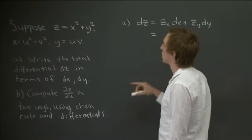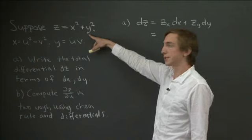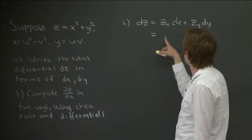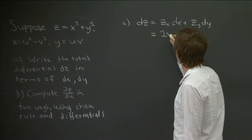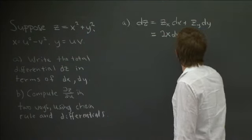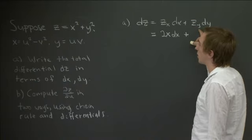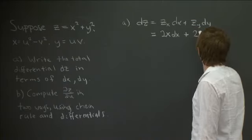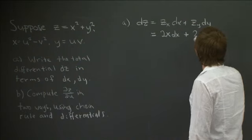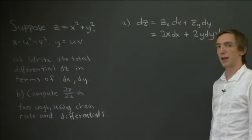So now, looking at our formula here for z, we have the partial derivative of z in the x direction is 2x. So this is 2x dx. And the partial derivative of z in the y is 2y. So we have 2y dy. And that's all we have to do for a.